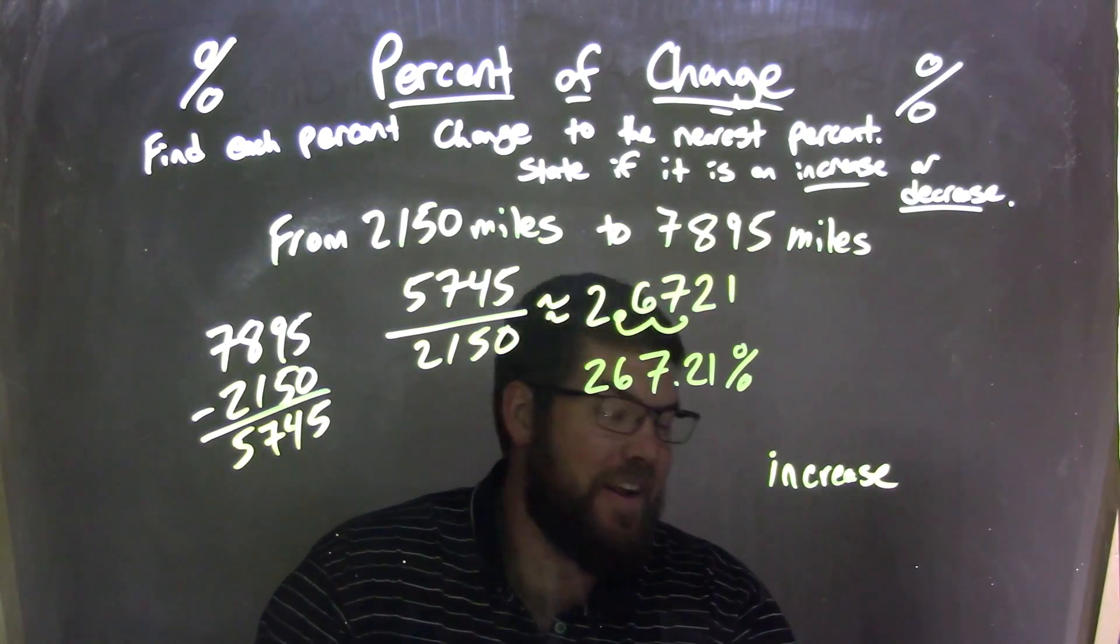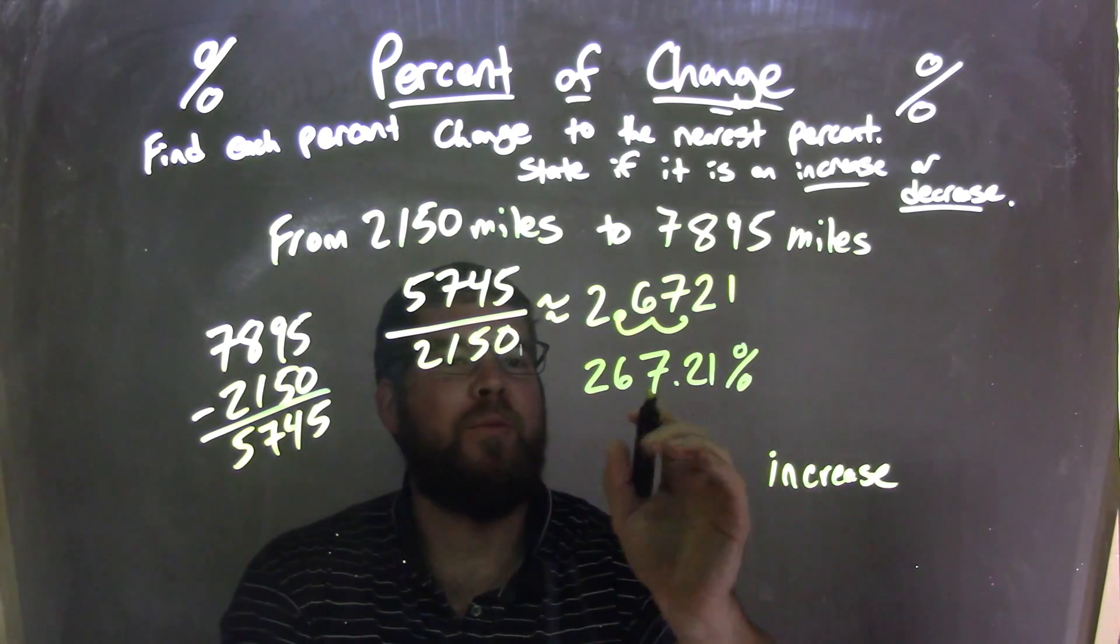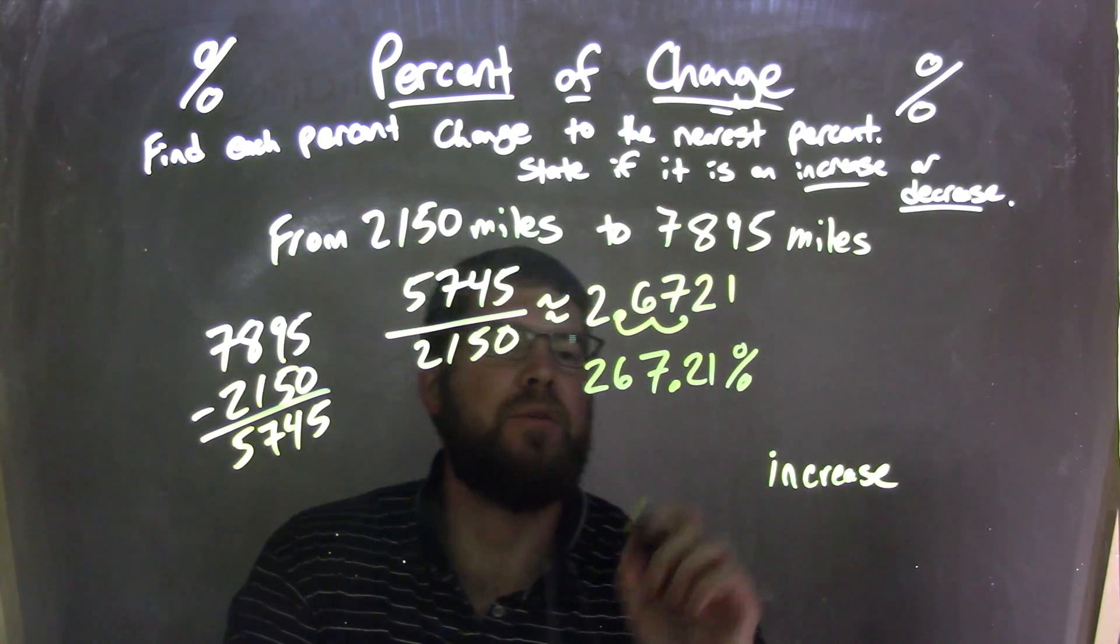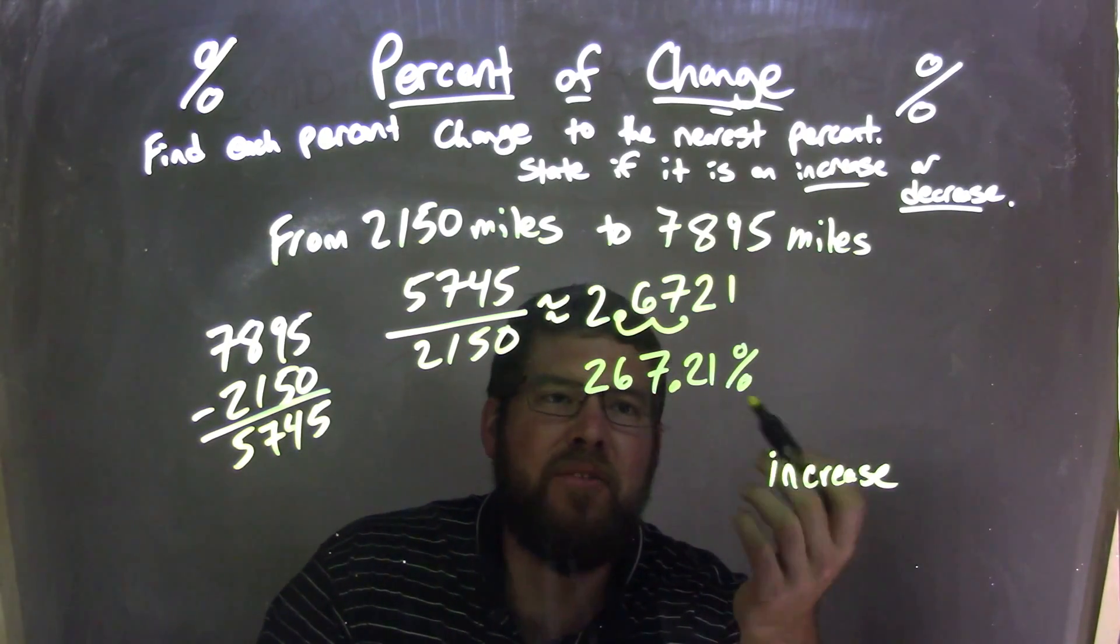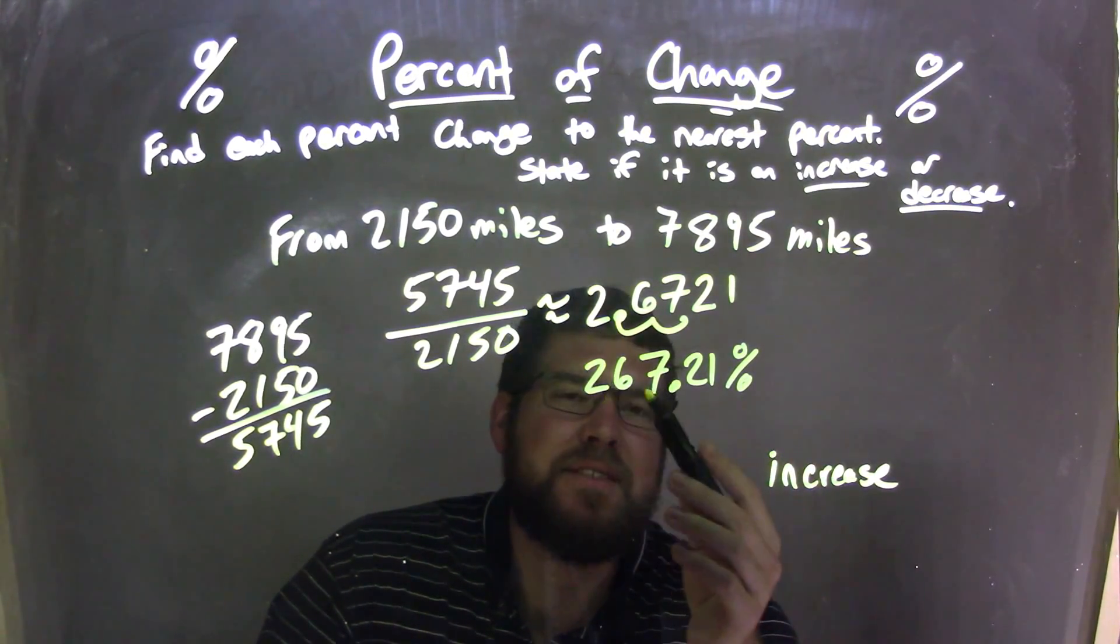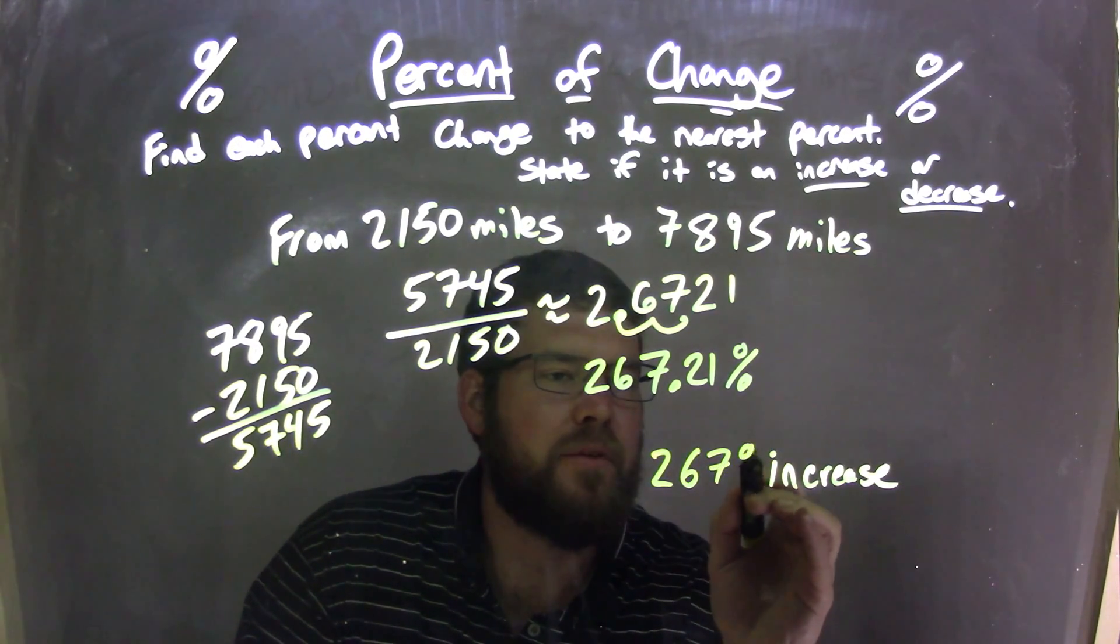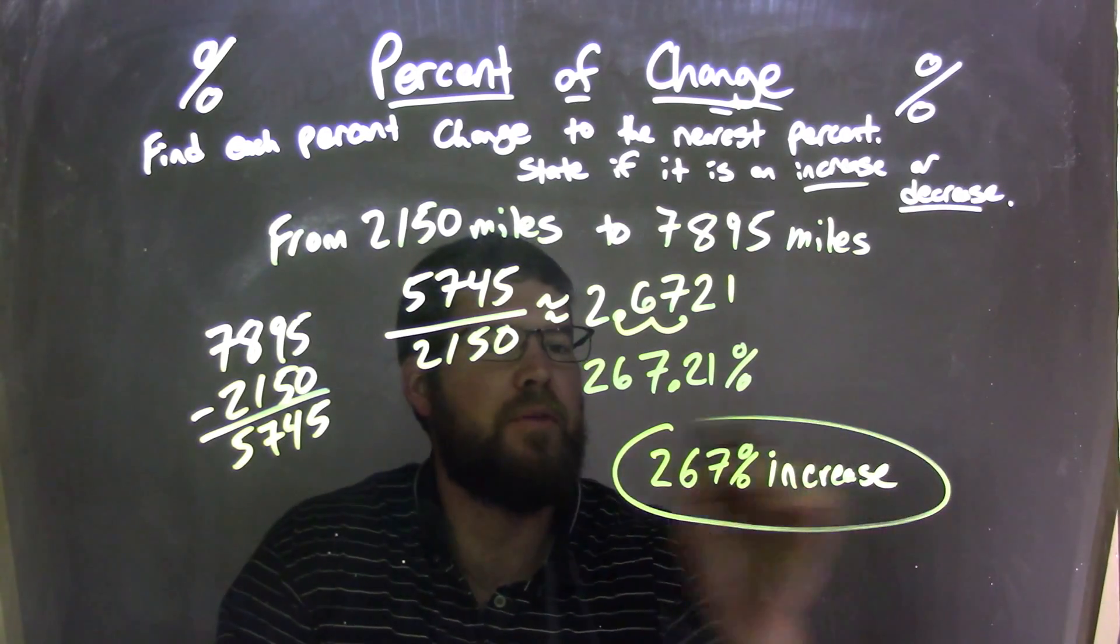I need to, not first, lastly, round that to the nearest percent. Well, that 0.2 here, that 0.2 causes 7 to round down, right? And so it's in that range of 0 to 4. And so now it's 267 percent. That's it. So it's 267 percent. And so, 267 percent increase.